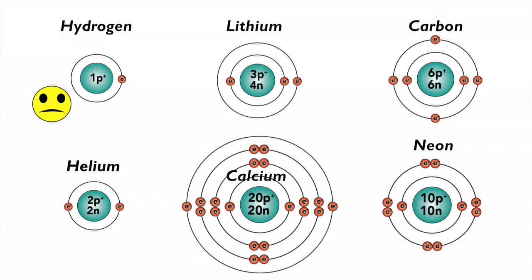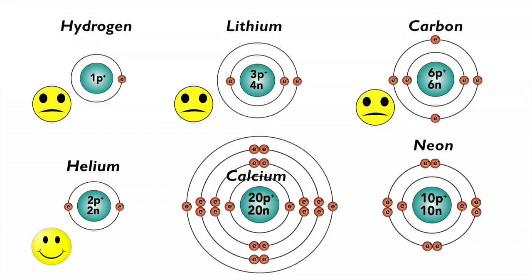Hydrogen is unhappy because its outer shell is the first one, which has a capacity of two. With one electron, hydrogen's an unhappy atom. Lithium is unhappy because its outer orbital has a capacity of eight, and it only has one electron in that shell. Carbon is unhappy because its outer shell also has a capacity of eight, and it only has four electrons in that shell. Helium has an outer orbital with two electrons, and that's the first orbital, so helium is a happy atom.